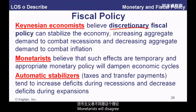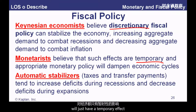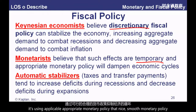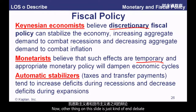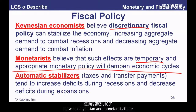Monetarists would disagree. Their belief is that anything you try and do will just have a temporary effect. All you should be doing to dampen cycles is using appropriate monetary policy — nice, smooth monetary policy. Let's just end the debate between Keynes and monetarists there and mention automatic stabilizers.